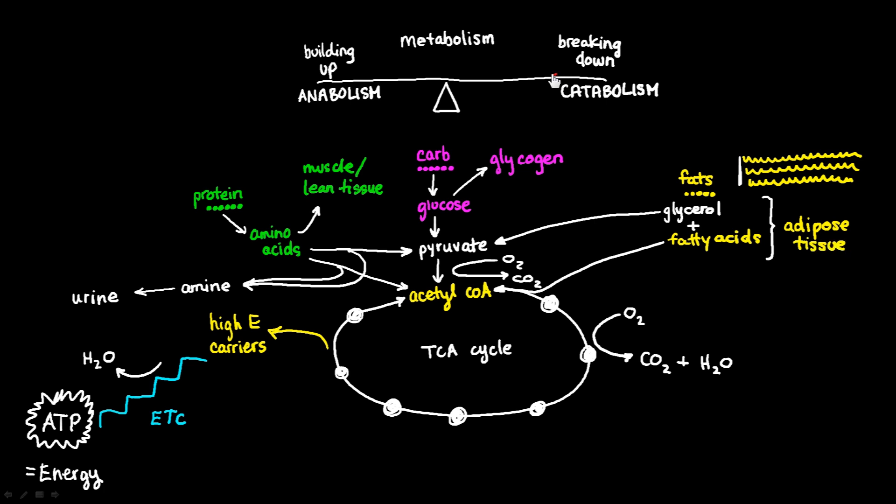And the balance between the breaking down reactions or the catabolic reactions and the building up reactions, the balance is controlled by hormones in our body. So there are several hormones that lead to breaking down of tissues. Things like glucagon leads to the breakdown of the stores of glycogen in our body. Other hormones are the fight or flight hormones, epinephrine is one of them. And glucocorticoids. These are the stress hormones in our body. And these guys all favor the breaking down or catabolism of the tissues.